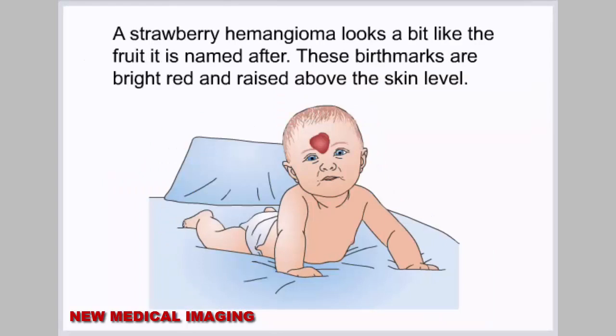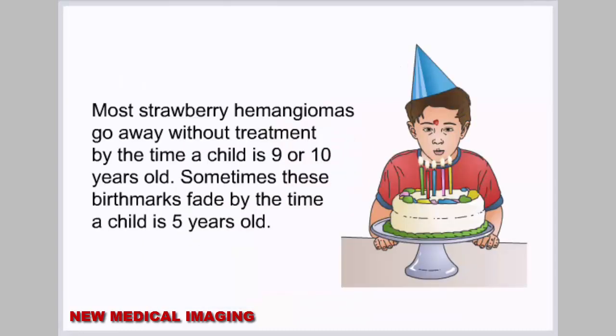A strawberry hemangioma looks a bit like the fruit it is named after. These birthmarks are bright red and raised above the skin level. Most strawberry hemangiomas go away without treatment by the time a child is nine or ten years old; sometimes these birthmarks fade by the time a child is five years old.